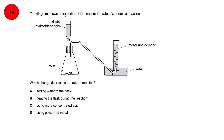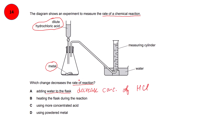The diagram shows an experiment to measure the rate of a chemical reaction where a metal reacts with dilute hydrochloric acid. Which change decreases the rate of reaction? Option A: adding water to the flask. If you add water to hydrochloric acid, it decreases the concentration of HCl — the acid becomes more dilute. A decrease in concentration will decrease the rate, so yes, this is the right option.